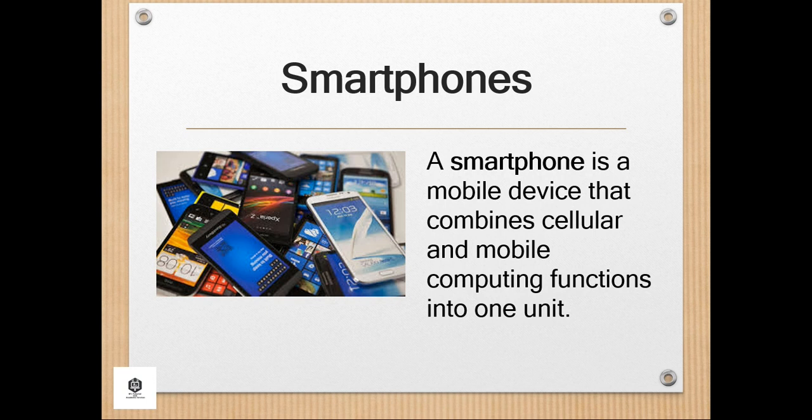Smartphones typically contain a number of metal oxide semiconductor or MOS integrated circuit chips, which include various sensors that can be leveraged by their software, such as a magnetometer, proximity sensors, barometer, gyroscope, or accelerometer, and support wireless communication protocols such as Bluetooth, Wi-Fi, or satellite navigation.